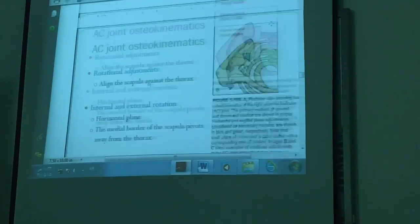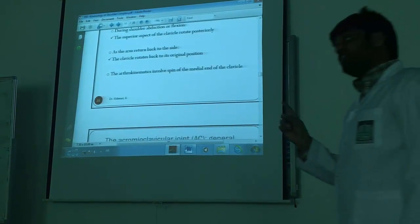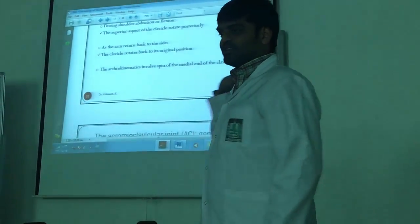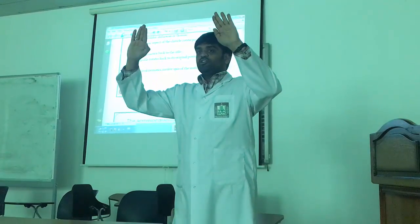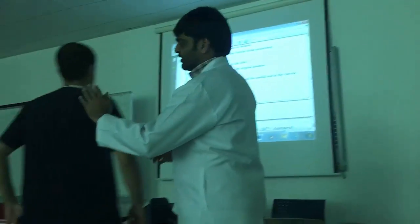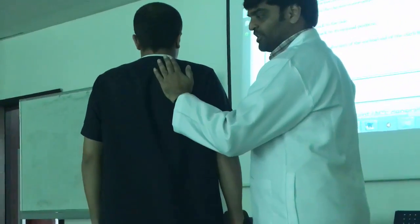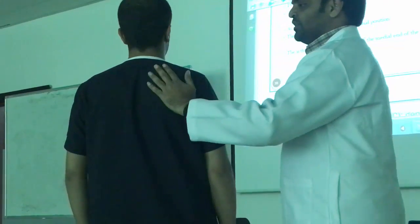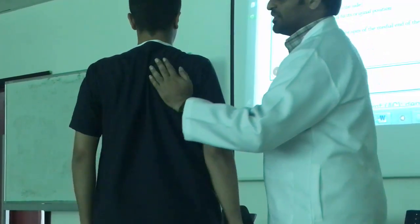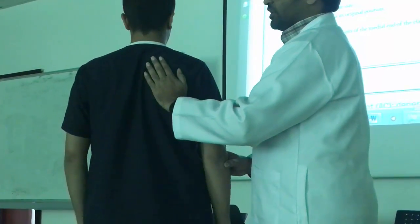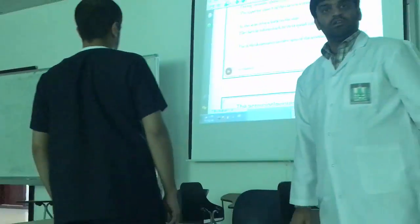The scapulothoracic joint also has three degrees of freedom: elevation, depression, protraction, retraction, upward rotation, and downward rotation. During elevation the scapula moves superior; during depression it moves inferior. During protraction the scapula moves towards the lateral side; during retraction it moves towards the medial side. During upward rotation the scapula moves upward and laterally; during downward rotation it moves down and medial.